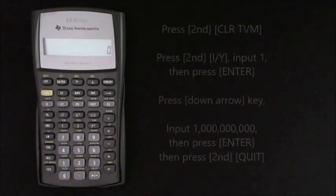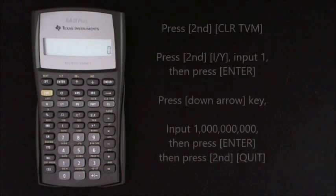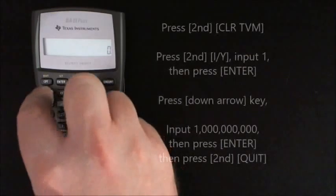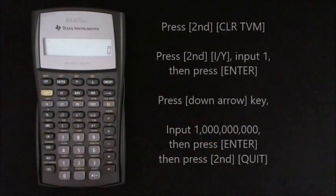The final way of answering the question is with the time value of money function on the calculator. So press second, clear time value of money. That gets rid of any previous calculations.